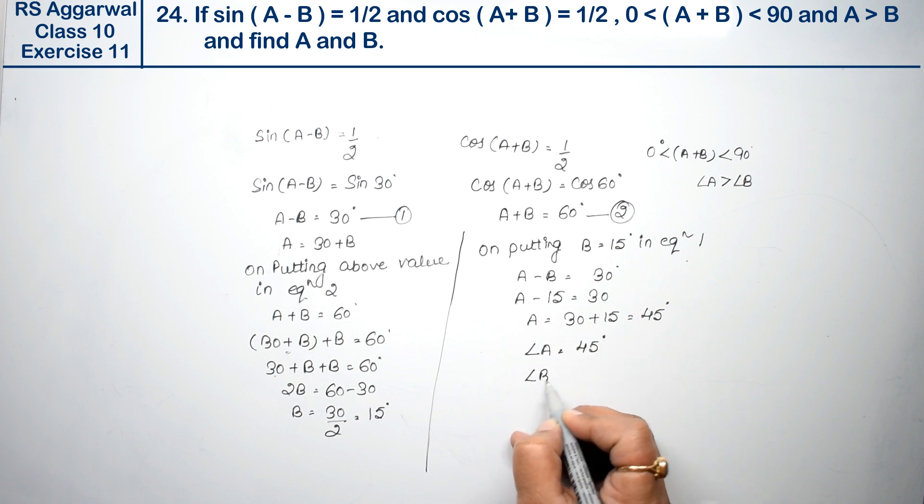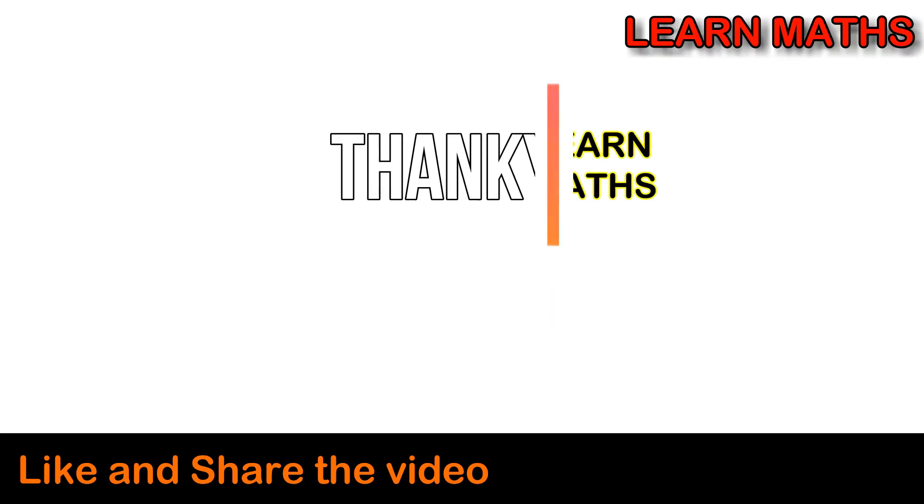So angle A ki value is 45 degrees, which is indeed greater than angle B, and B ki value is 15 degree. This is the answer. Thank you.